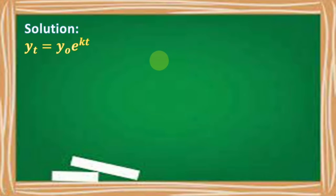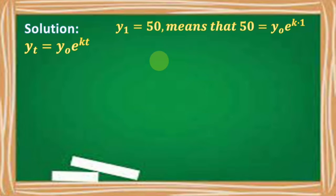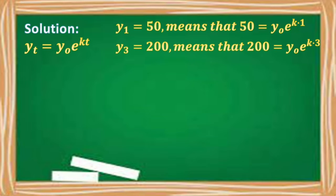From the equation y_t = y₀ · e^(kt), we derive: after one day, y₁ = 50 means 50 = y₀ · e^(k·1). After three days, y₃ = 200 means 200 = y₀ · e^(k·3).